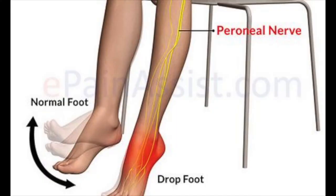Atrophy only occurs when the muscle belly shrinks due to a lack of nerve supply. Motor nerve loss typically occurs gradually, though there are rare circumstances where the entire muscle group can fail all at once. In a leg with peroneal neuropathy, this might manifest as foot drop — inability to hold the foot up when walking.